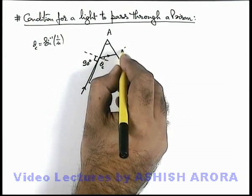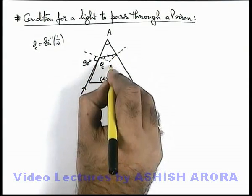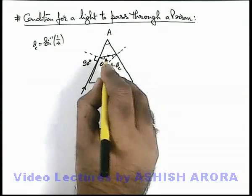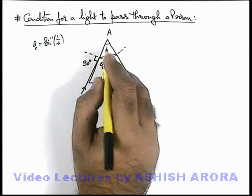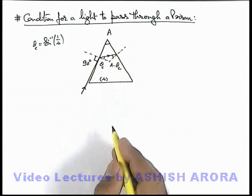Then on the other matte surface, the incidence angle will be A minus theta c, because the sum of these two internal angles is always equal to the prism angle.